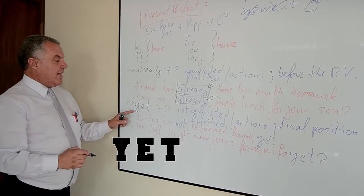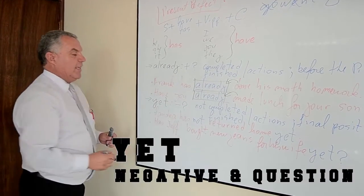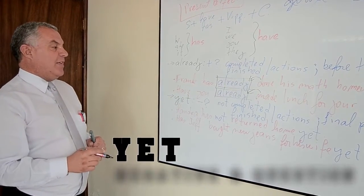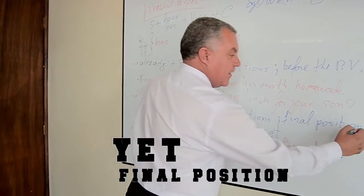Let's continue. Yet, we're using negative and questions. Indicate that an action hasn't been completed or hasn't been finished. And it has final position.